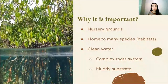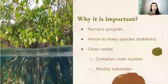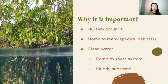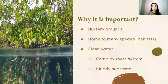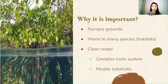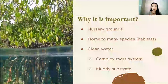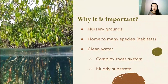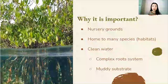Mangroves also provide nursery grounds for various animal species, including fish, shrimp, and others. Many animals will find shelter among the mangroves' roots before they go into the ocean. Mangroves also provide habitats for thousands of species — for example, the soft soil beneath the mangroves is the habitat for some snails and crabs. Finally, mangroves are also important for protecting water quality because the complex root system and substrates of mangroves help to break down and filter solid waste.